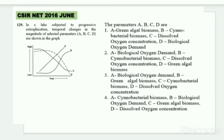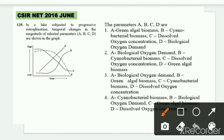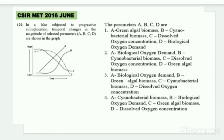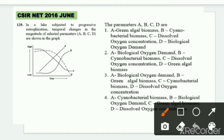Now the next question, asked in June 2016, is a Part C question. Don't be scared seeing such a big question — it is very simple and can be resolved easily with common sense. The question says: a lake subjected to progressive eutrophication — temporal changes in magnitude of selected parameters A, B, C, and D are shown in the graph. There are four parameters: A, B, C, and D.